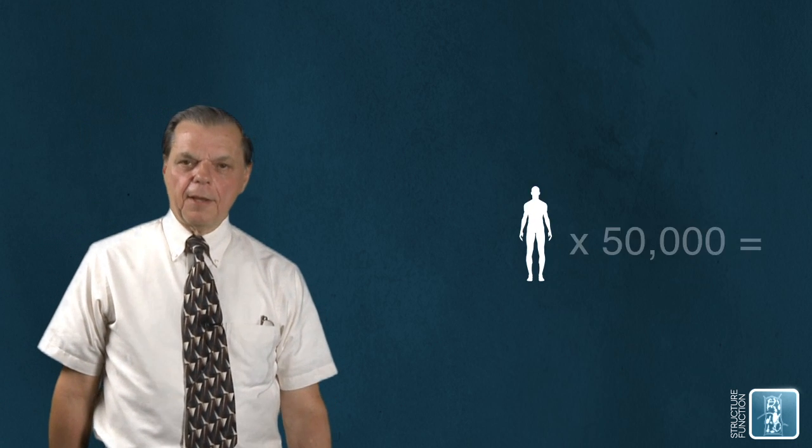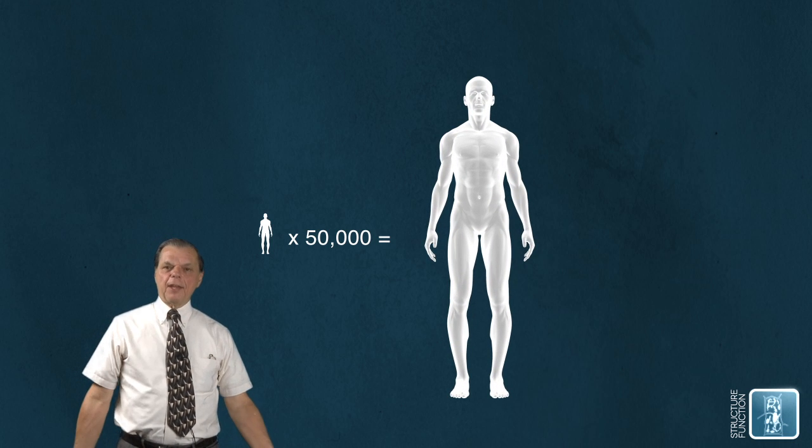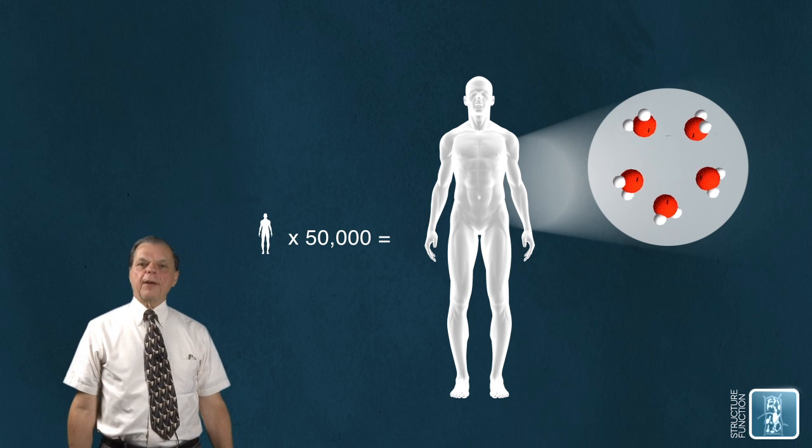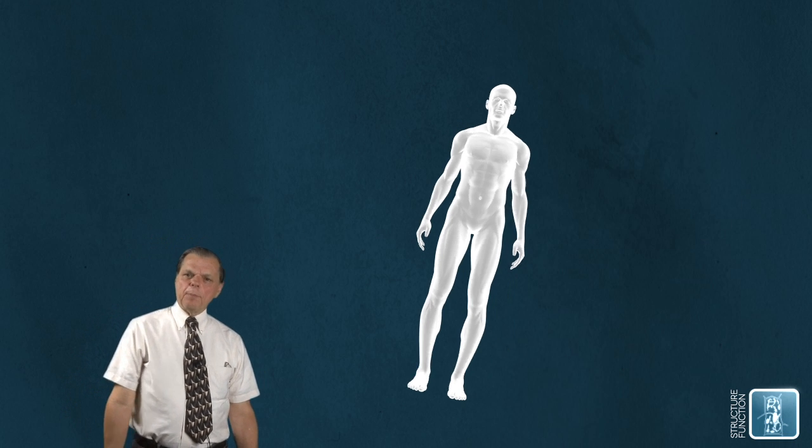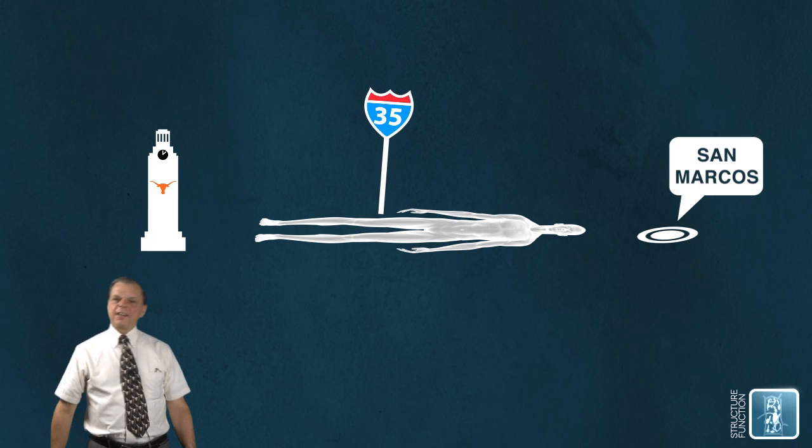Let me start off by giving you a visual picture. Let's suppose we magnify a human being by about 50,000 times, a huge amount. And we magnify everything in that human being, including all the molecules and any other organisms associated with it 50,000 times. And then we lay that human being down on I-35 so it stretches somewhere about between here and San Marcos.